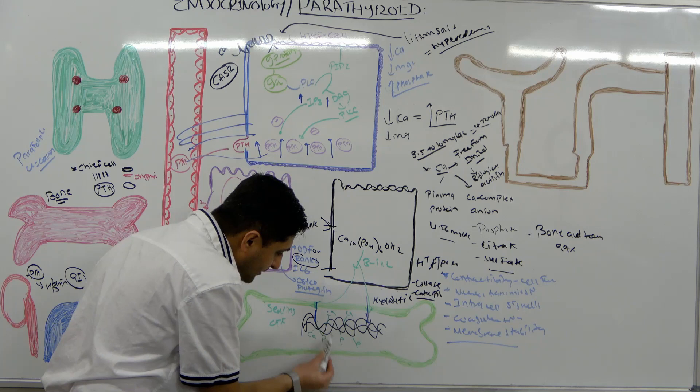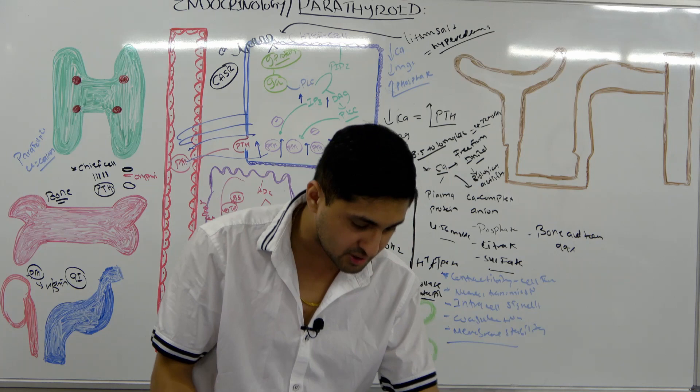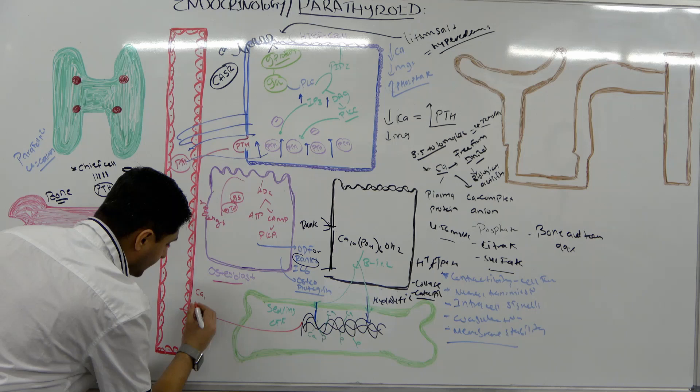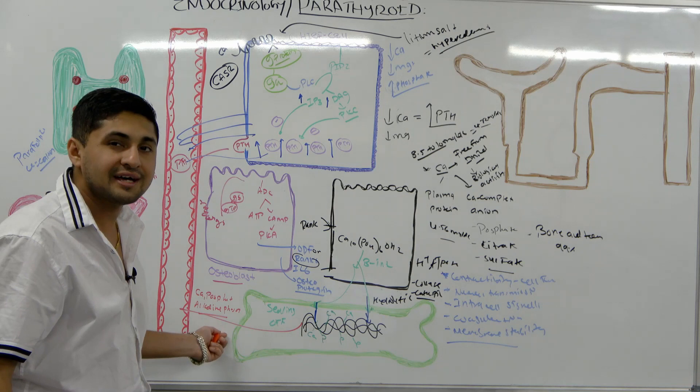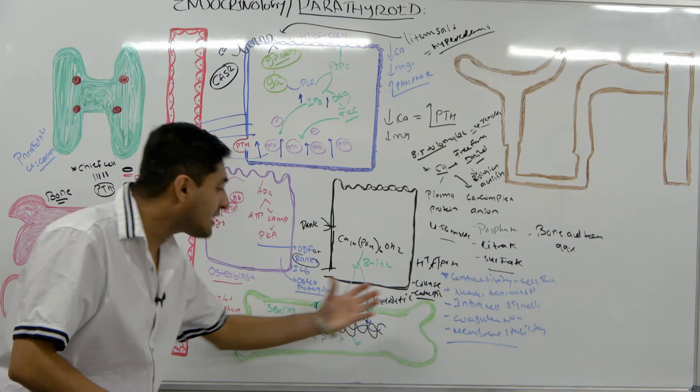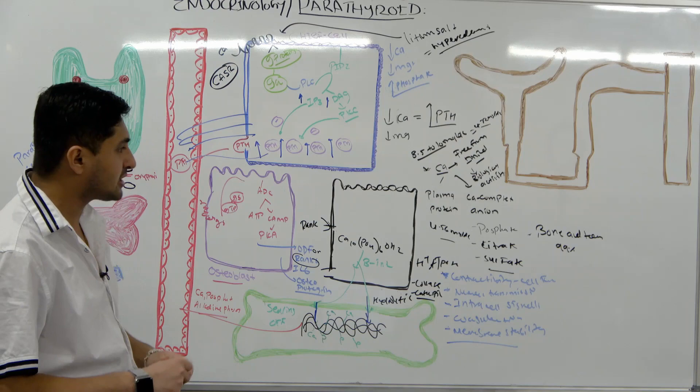These enzymes start breaking down the collagen and hydroxyapatite. What enters the circulation are calcium, phosphate, and alkaline phosphatase. Whenever you see elevated alkaline phosphatase in the plasma, that is a marker of bone breakdown and mobilization of calcium.